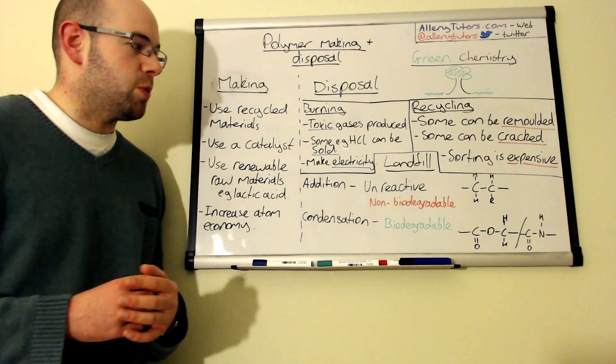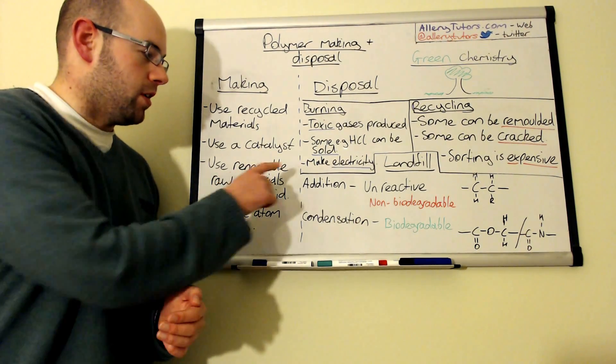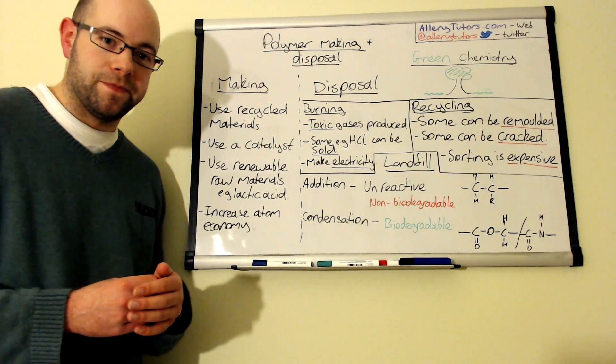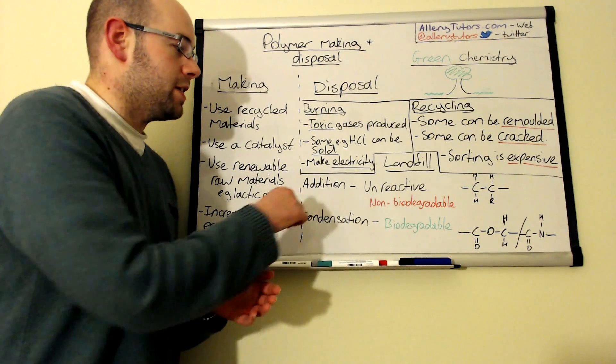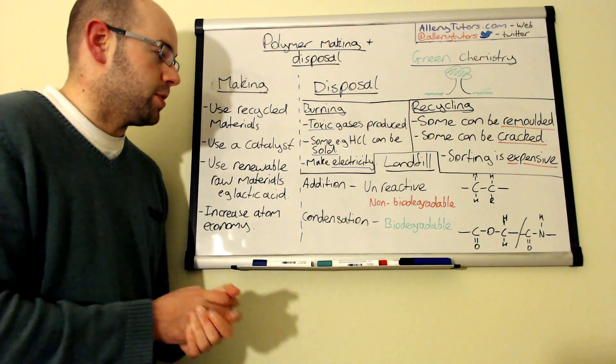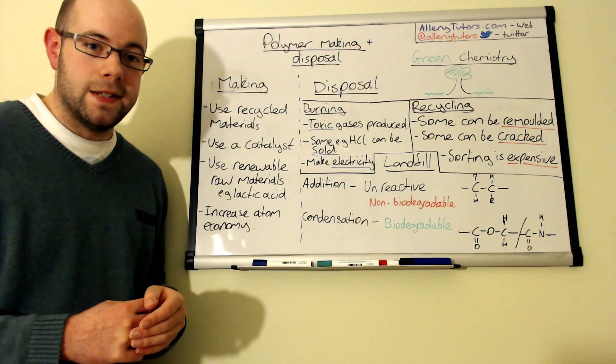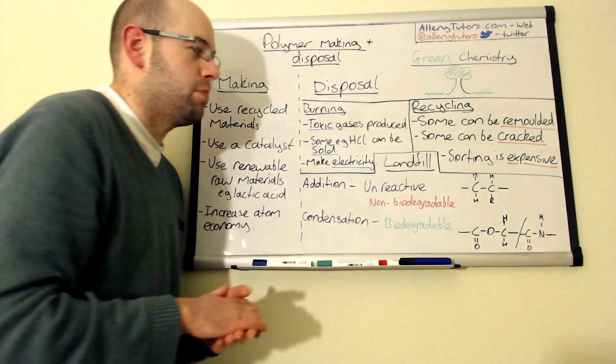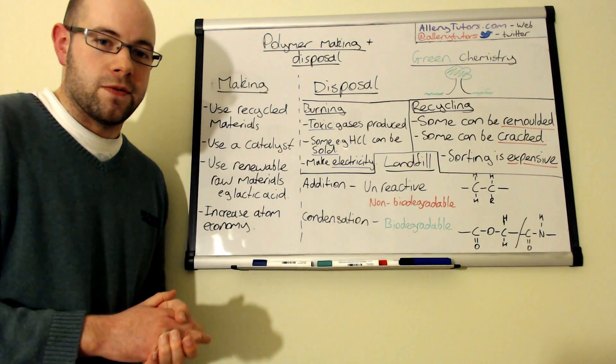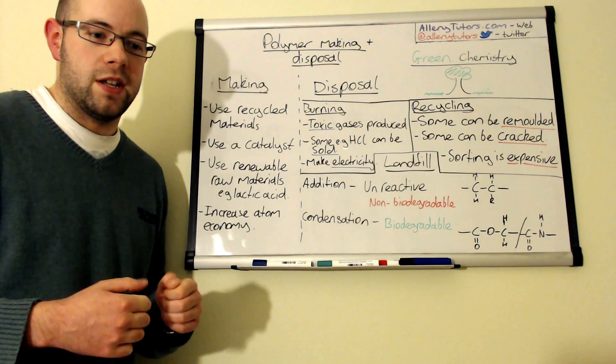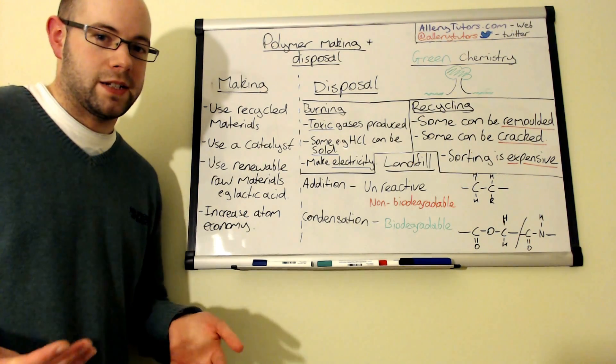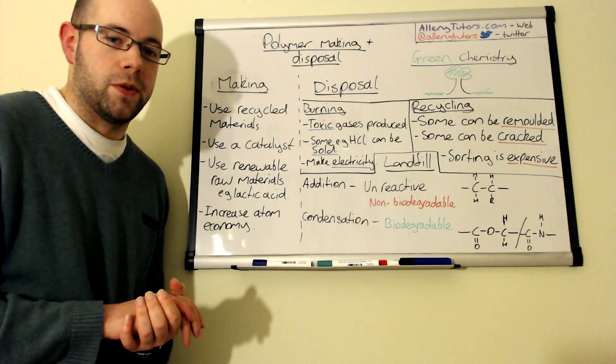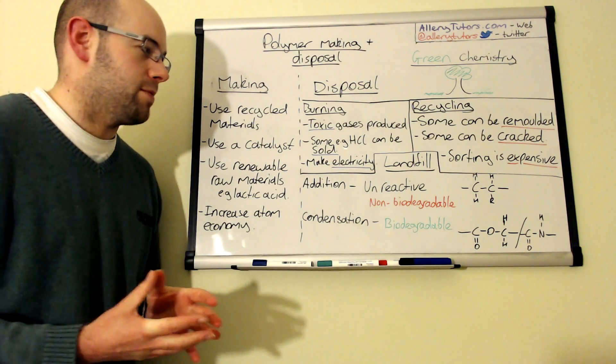The last one is landfill. You've got addition and condensation polymers. Addition polymers, these are alkenes that are added to make a polymer. These are generally unreactive because of the non-polar carbon-carbon bond. That might be good for its use because they'll generally last a lot longer, so if you're making a plastic chair you want it to last a long time. However, they're non-biodegradable. It's very difficult for things like enzymes and bacteria to break down things like this.